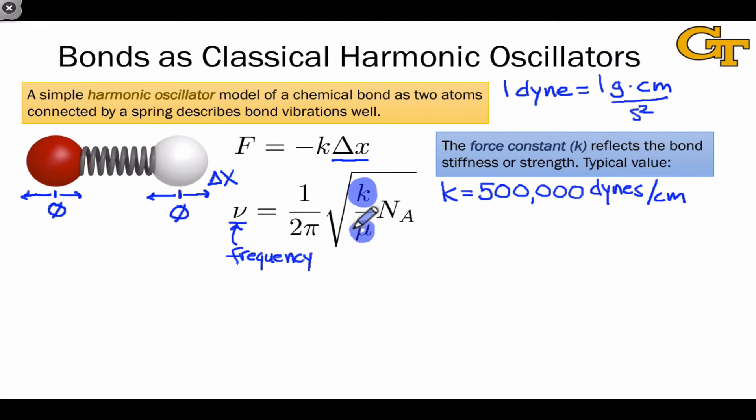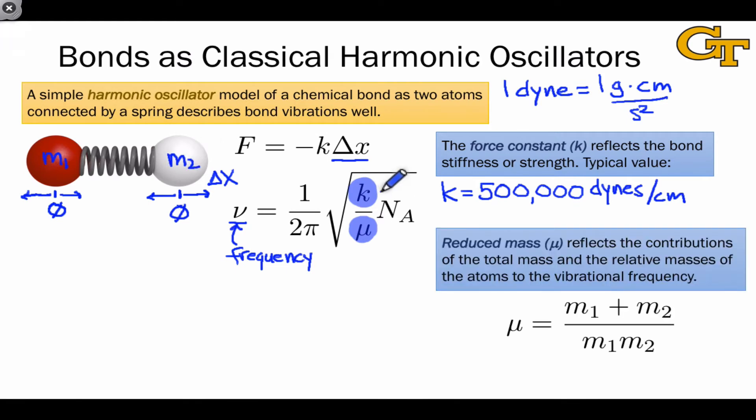The other parameter in this equation is mu, a measure of the masses of the atoms, m1 and m2. While the force constant K reflects the strength of the bond, mu accounts for the masses of the atoms and how they affect frequency. Mu is equal to the sum of the two masses divided by their product. And we can actually write this another way that can make this number more intuitive: it's also equal to 1 over the first mass plus 1 over the second mass to the negative 1 power.